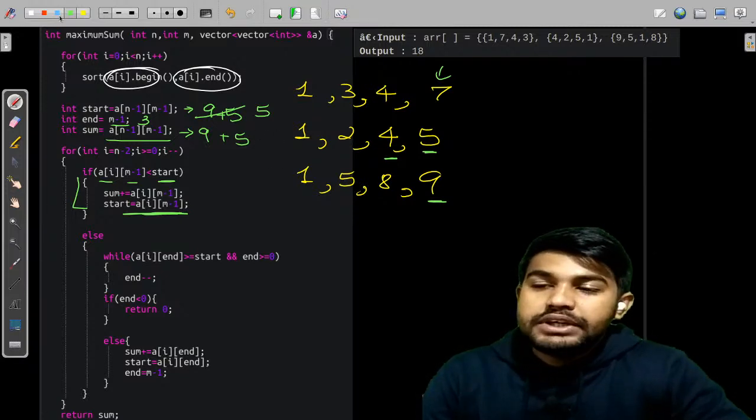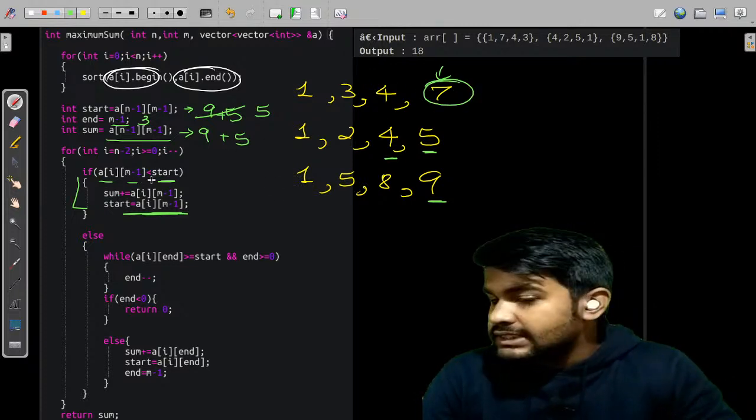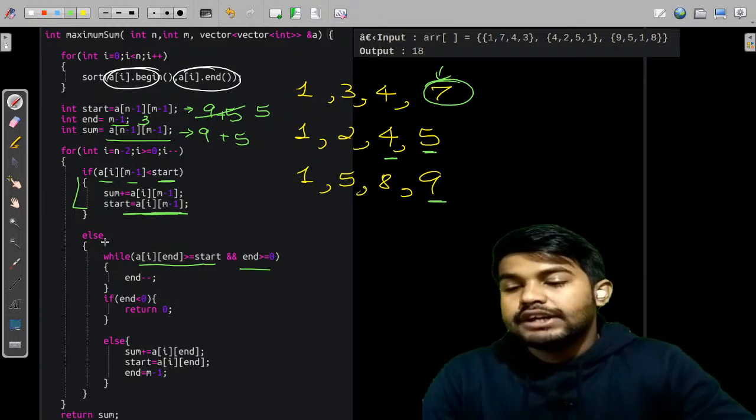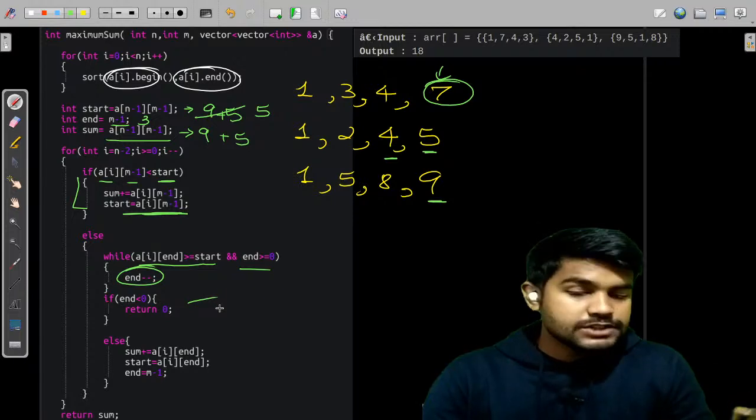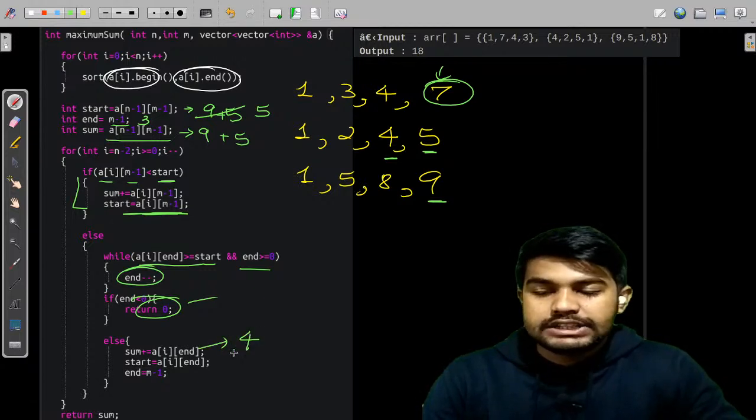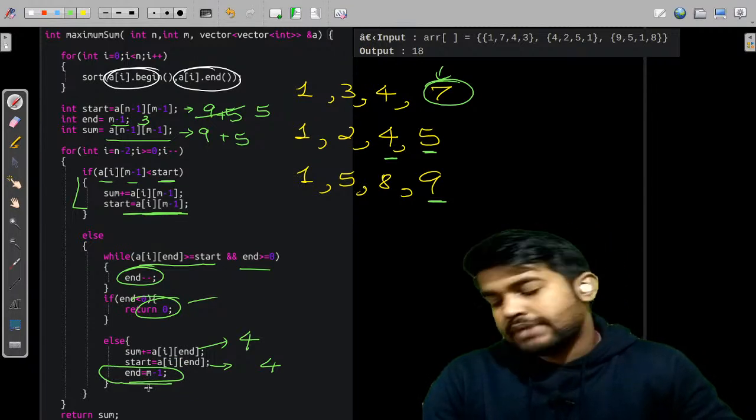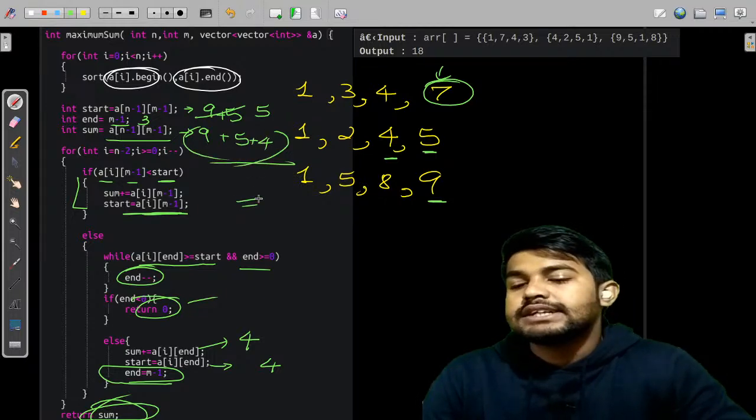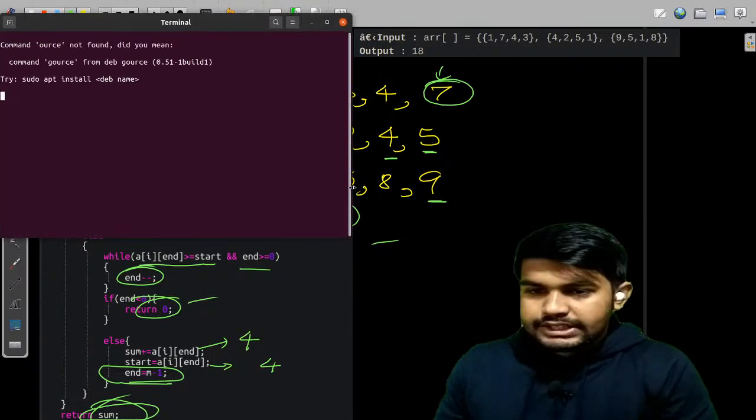Then we come to 7. This 7 is greater than start, so we do end minus minus while the last value is greater than the start and we have an index left. If we have exhausted all the indices and were not able to find a value less than the last value, we would return 0. Else we would simply add this 4. Start becomes 4, and we return the value 9 plus 5 plus 4, which is 18. That is how the answer is 18.